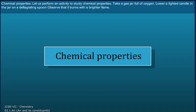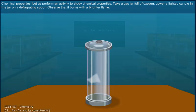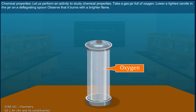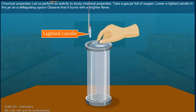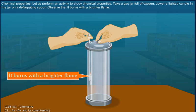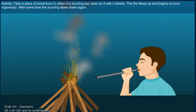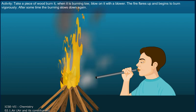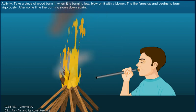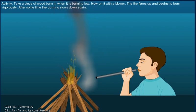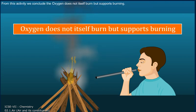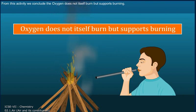Let us perform an activity to study the chemical properties of oxygen. Take a gas jar full of oxygen. Lower a lighted candle in the jar on a deflagrating spoon. Observe that it burns with a brighter flame. Now take a piece of wood. Burn it. When it is burning low, blow on it with a blower. The fire flares up and begins to burn vigorously. After some time, the burning slows down again. From this activity, we conclude that oxygen does not itself burn but supports burning.